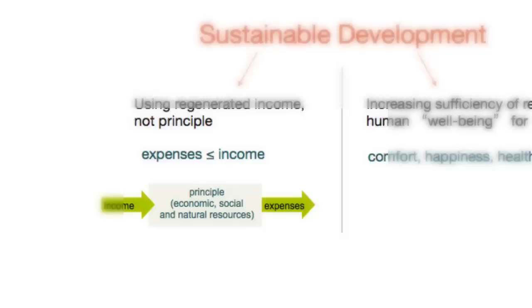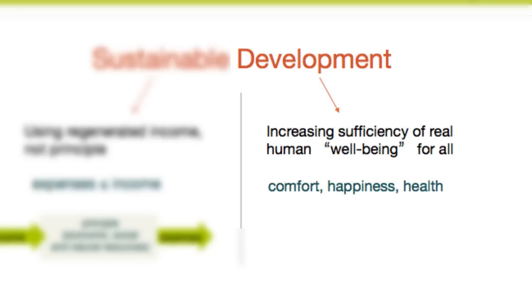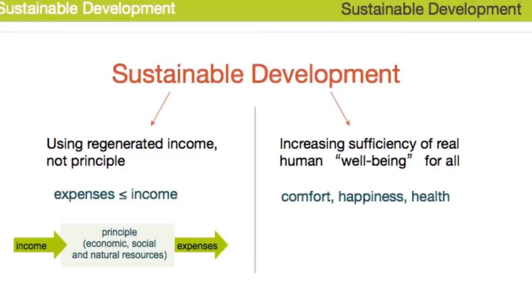Let's look at another metaphor for sustainable development. The idea depicted here is that of stocks and flows. The term sustainable means that the flow of expenses is less than the flow of income, so the stock of resources is not depleted. The term development implies an increase in sufficiency of real human well-being for all. Well-being, which refers to comfort, happiness, and health, can mean different things to different people — and this is one of the inherent challenges with sustainable development.